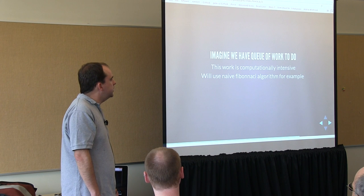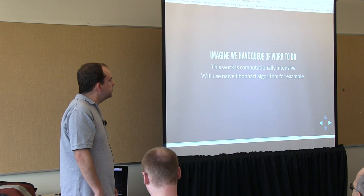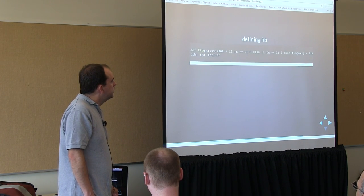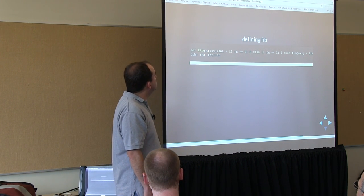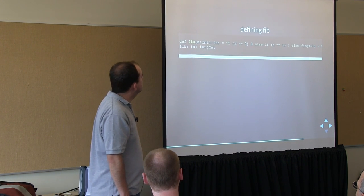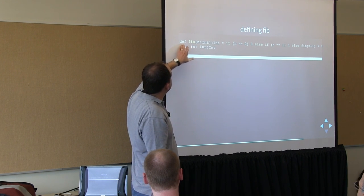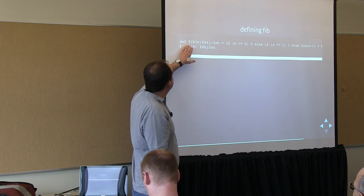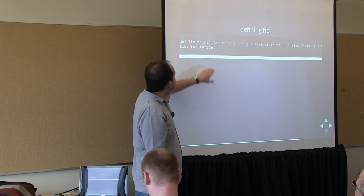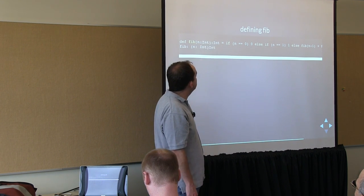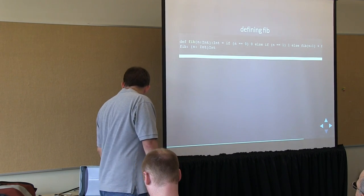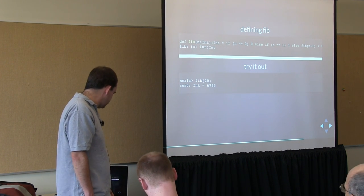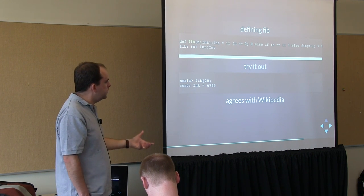Using a naive Fibonacci algorithm as an example of something computationally intense — more CPU-bound than IO-bound — I'll try to find the Fibonacci number for a vector of input numbers. This is my naive Fibonacci implementation using the method definition syntax. It defines a method called fib that takes an integer value, returns an integer, and uses the standard recursive Fibonacci algorithm. Calling fib(20) returns 6,765, which agrees with Wikipedia.